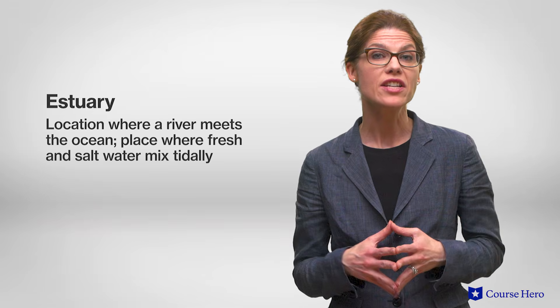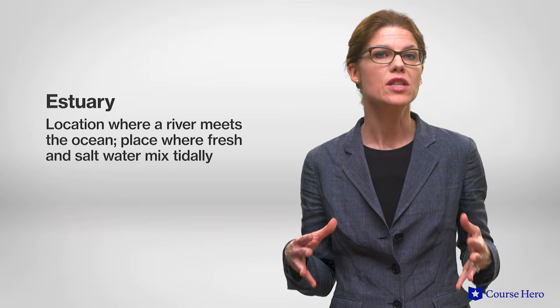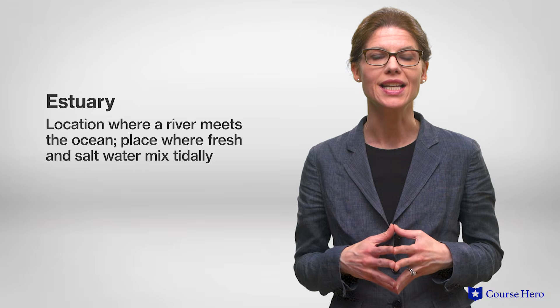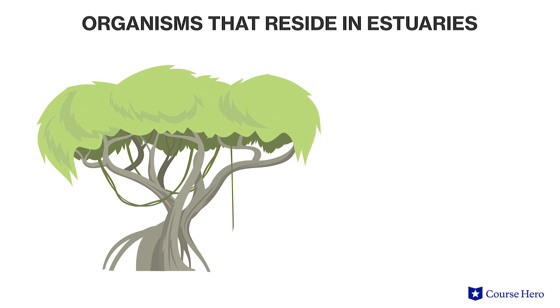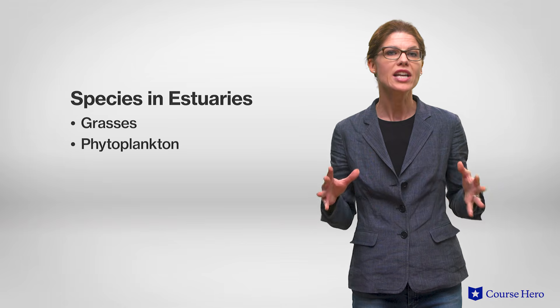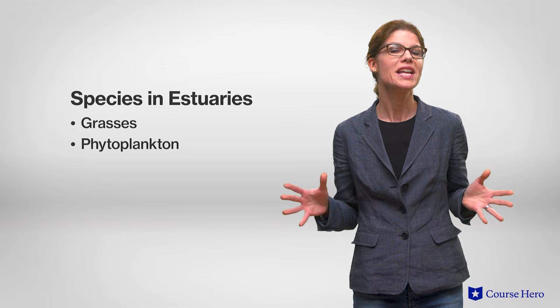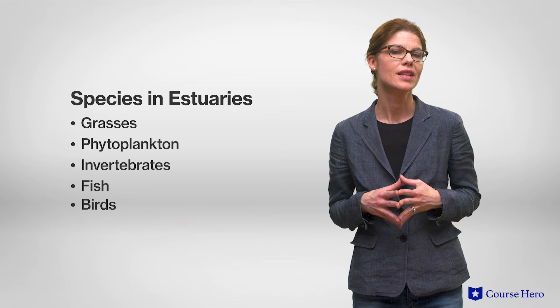An estuary is the location where a river meets the ocean. Thus, it is a place where fresh and salt water mix depending on the tides. Many organisms that reside in estuaries must be able to tolerate a wide range of salinities. Examples of such organisms include mangrove trees and blue crabs. Nutrients flowing in from the river contribute to the high productivity of estuaries. Grasses and phytoplankton are common in these biomes, as there are many species of invertebrates, fish and birds. This makes estuaries a popular feeding place for humans and marine predators alike. Similar to wetlands, these highly productive biomes are in danger because of habitat loss through urban development by humans.